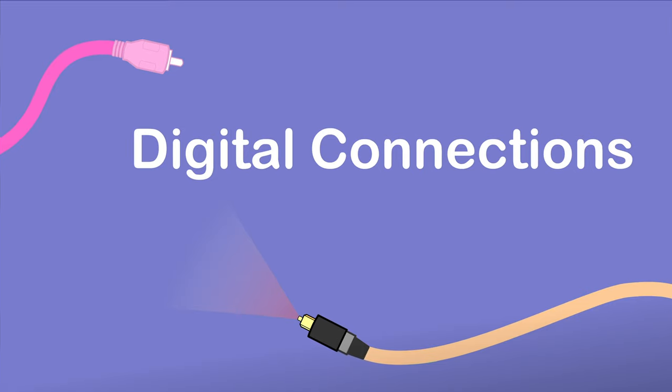Now let's talk about the digital audio connections commonly found on audio interfaces. First, we have the Sony Philips Digital Interface, or S/PDIF — however you want to pronounce it. S/PDIF carries two channels of digital audio and uses either a coaxial cable with RCA connectors, which you will most likely find on audio interfaces, or an optical cable with Toslink connectors, which is more common with modern smart TVs and consumer active speakers such as soundbars.